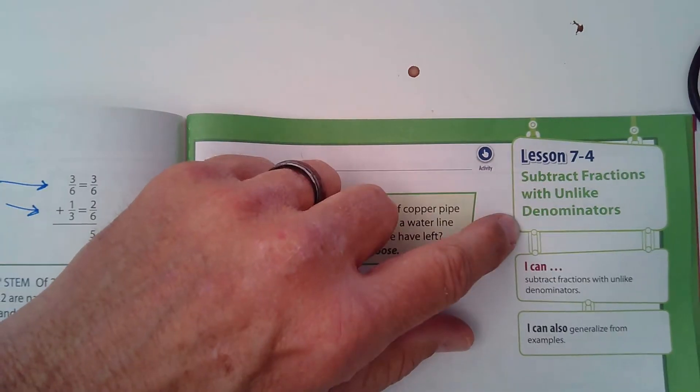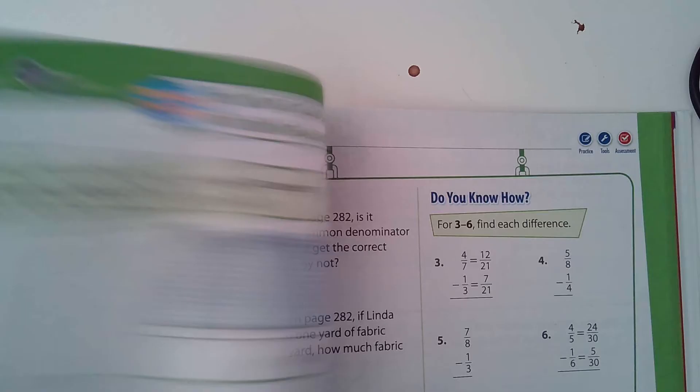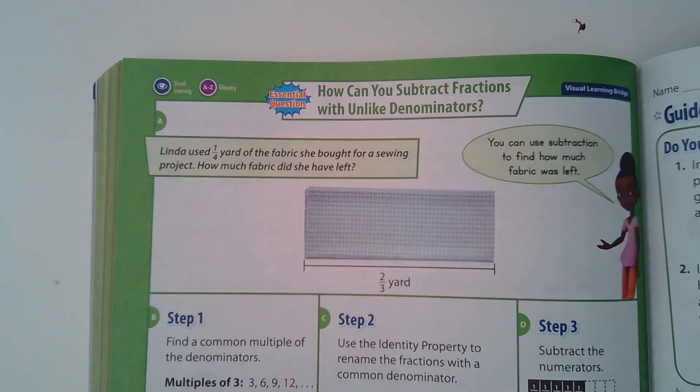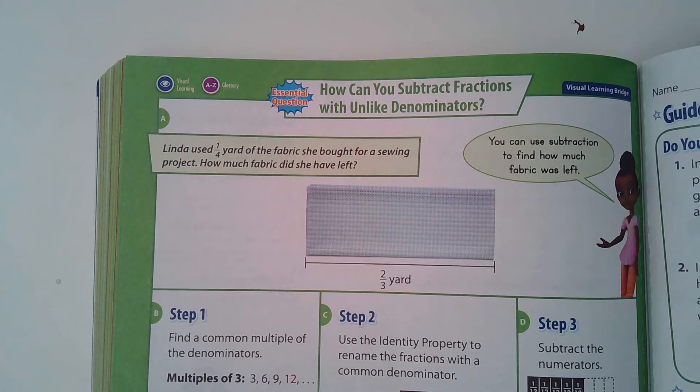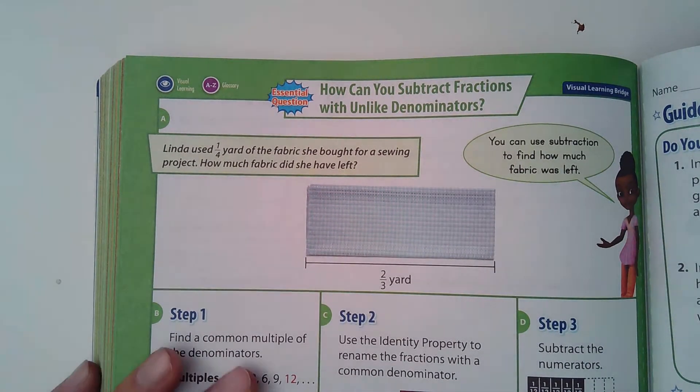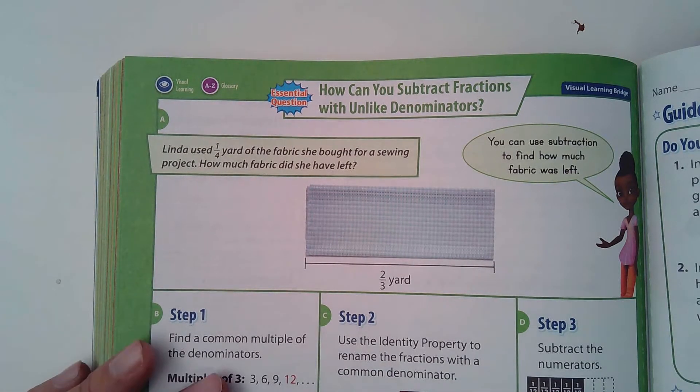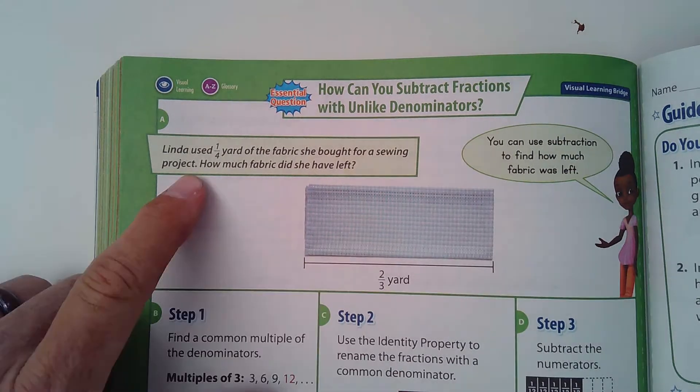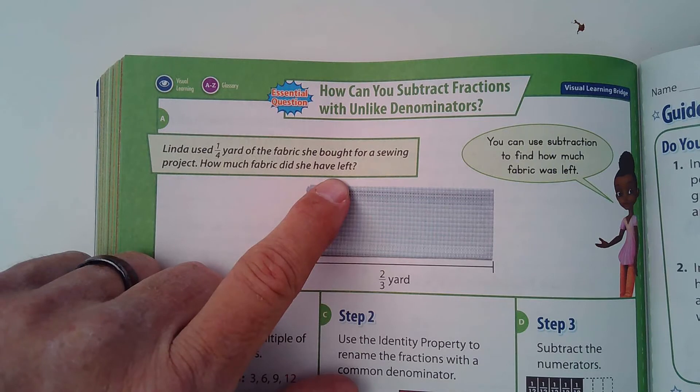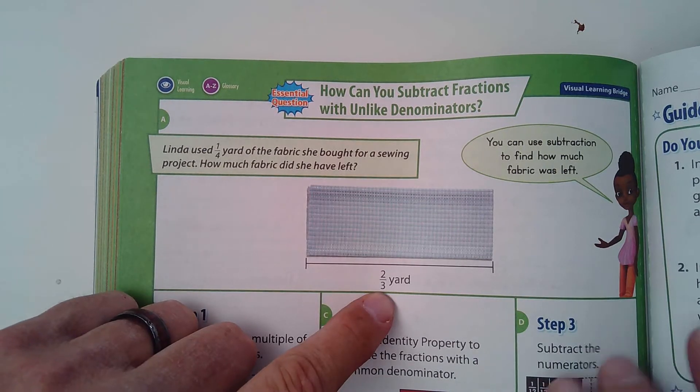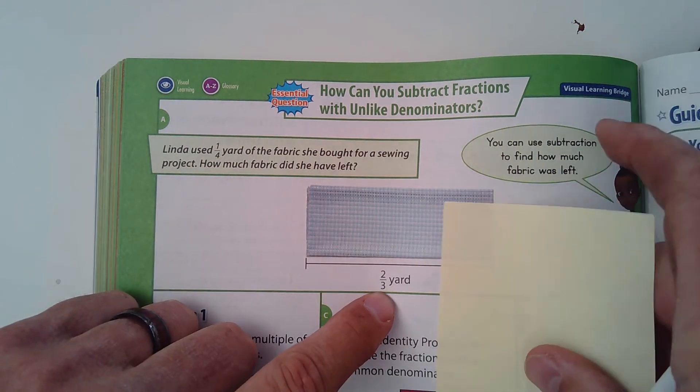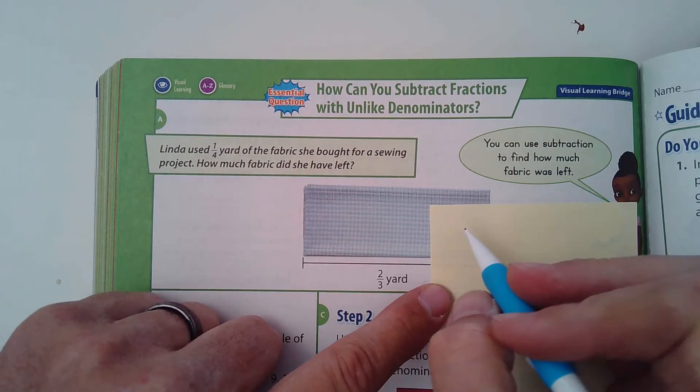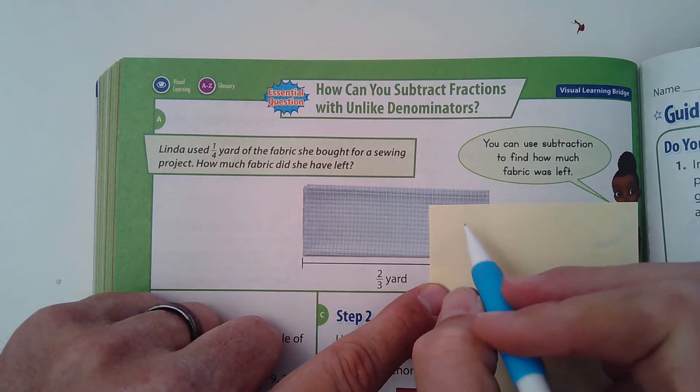We're subtracting fractions with unlike denominators. So let's just take a quick look at what they've set up here for us. It says Linda used a quarter of the yard of fabric that she bought for a sewing project. How much fabric did she have left? Well, she started with two-thirds and she used a quarter of it.